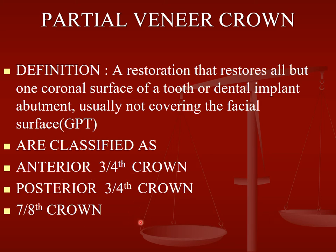The seven-eighth crown covers all surfaces but the mesio-buccal cusp of the maxillary molar tooth. So it covers everything except the mesio-buccal cusp of the maxillary molar — that is known as the seven-eighth crown.